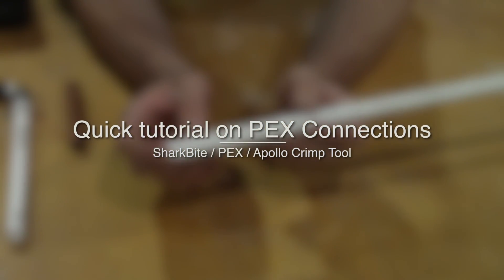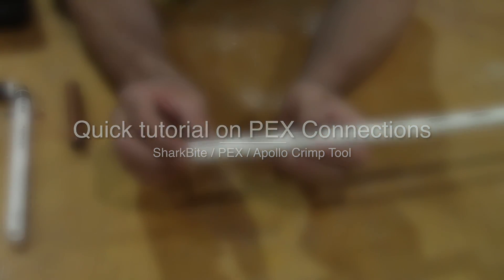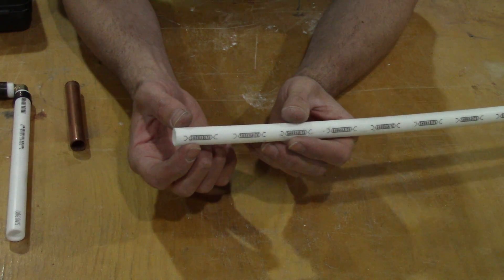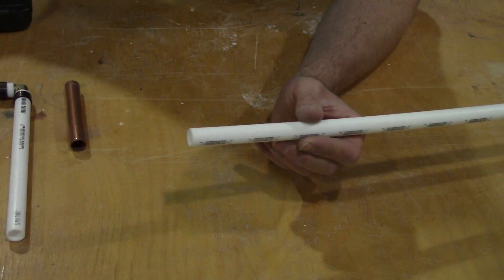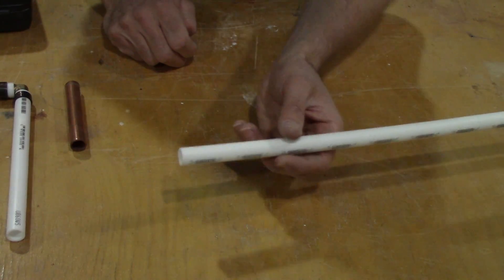Okay, in this video I'll show you how to add connections on PEX tubing with the crimp tool set. I'm also going to show you how to use a SharkBite fitting. Those are really neat, they're more expensive though.